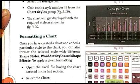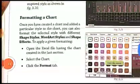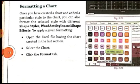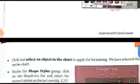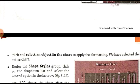To apply a given formatting, first open the Excel file with the chart, then select the chart. The first step is to click the Format tab. Once you click on the Format tab, you also have to click and select an object in the chart where you want to apply the formatting. In our example, we have selected the whole chart, so the formatting will be applied to the entire chart.